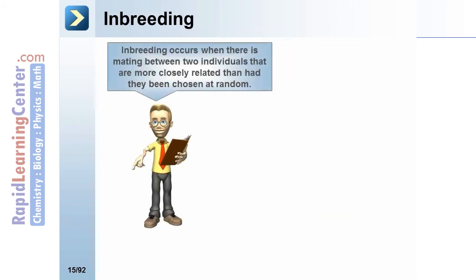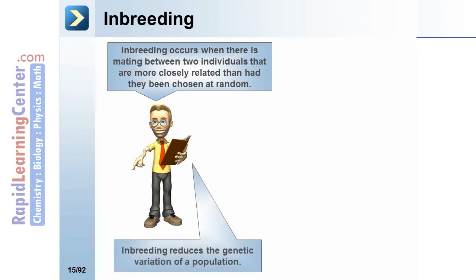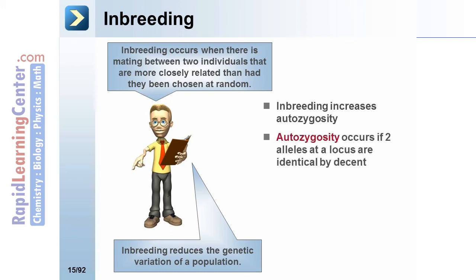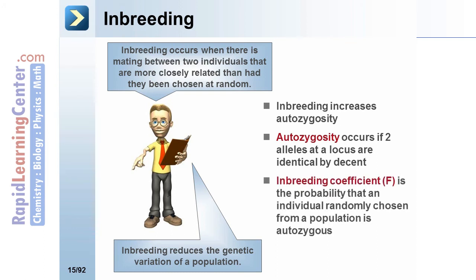Inbreeding occurs when there is mating between two individuals that are more closely related than if they had been chosen at random. Inbreeding reduces the genetic variation of a population and increases autozygosity. Autozygosity occurs when two alleles at a locus are identical by descent. The inbreeding coefficient is the probability that an individual randomly chosen from a population is autozygous.